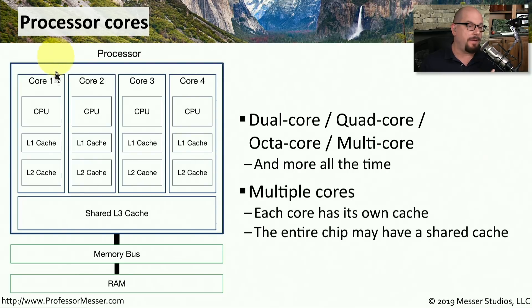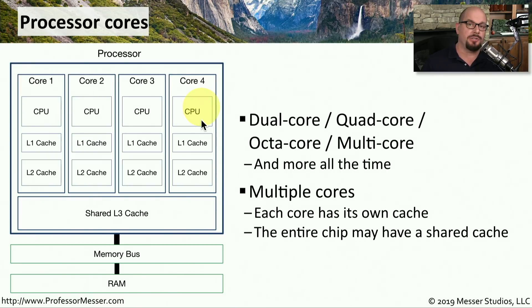The block diagram I have here shows four different cores, and each core has its own CPU. This means that four separate transactions could be occurring simultaneously.